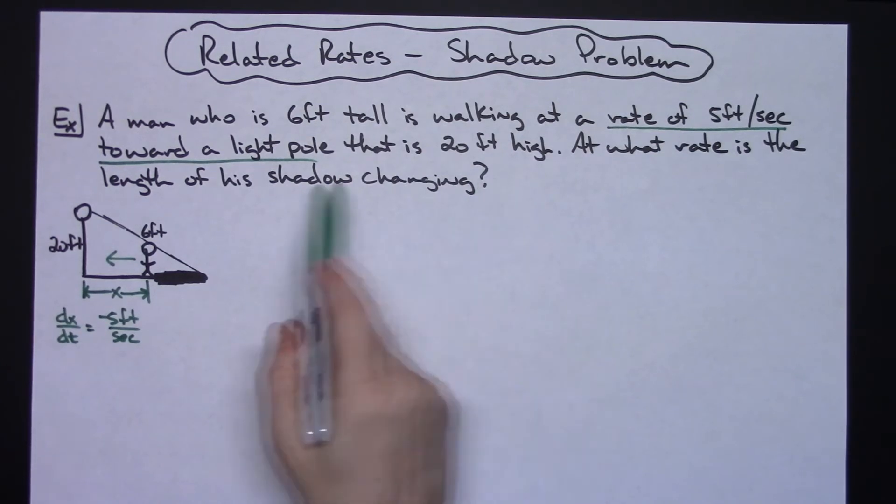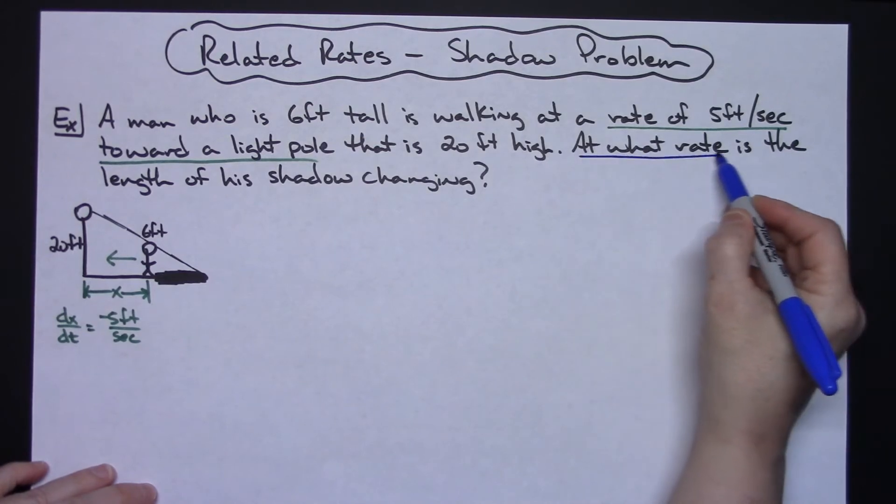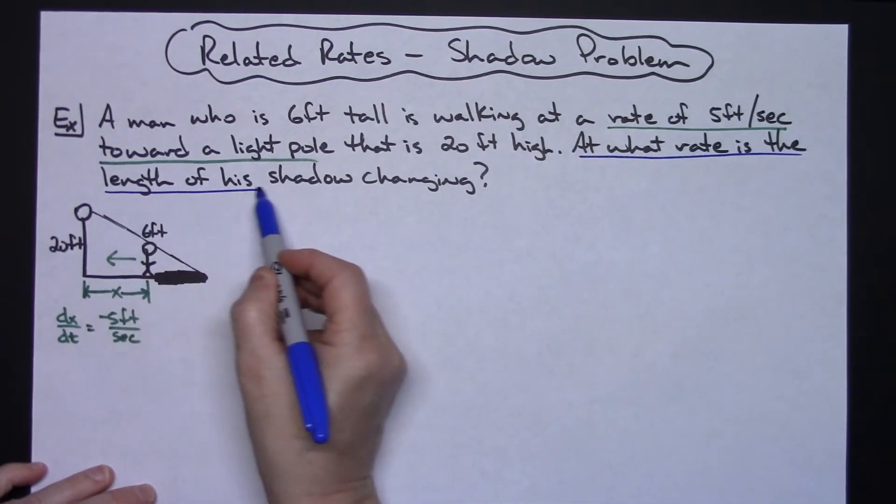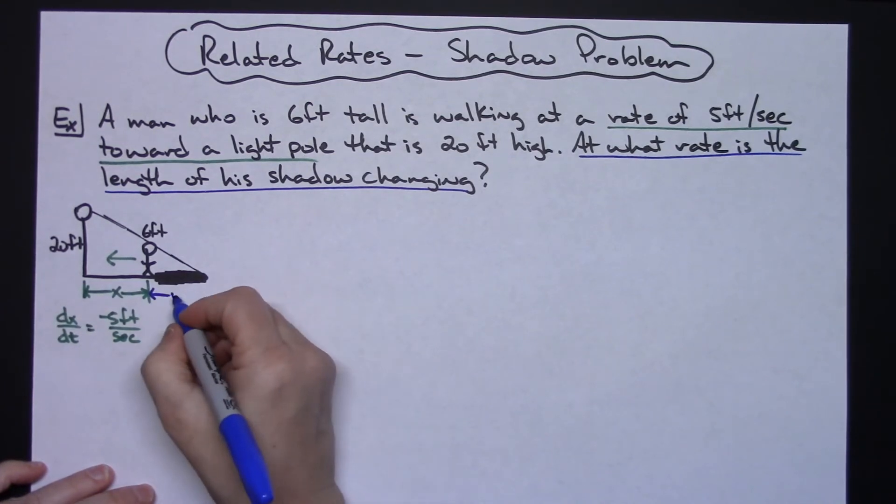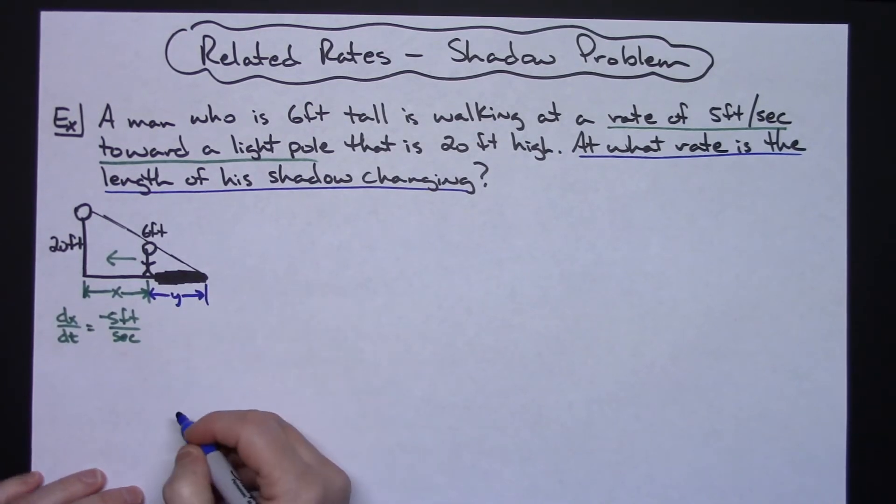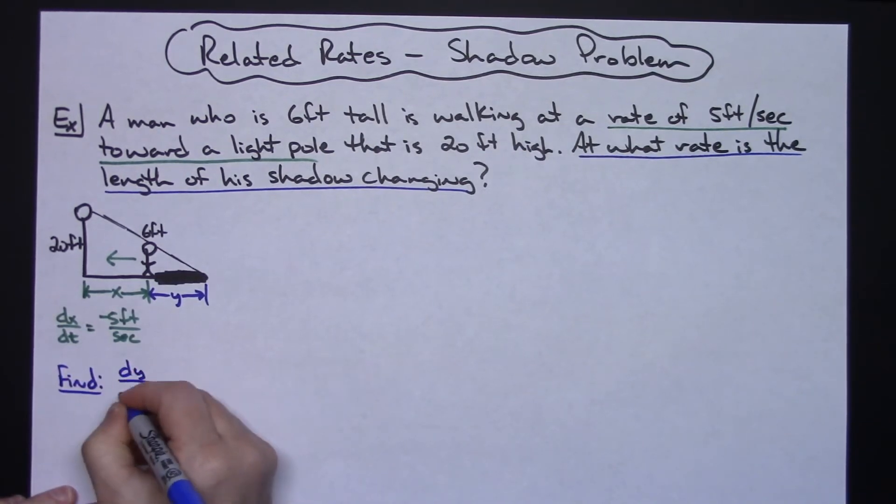What else does it give me? Twenty feet high for the pole—we've used that. At what rate is the length of his shadow changing? So let's do that in blue here. At what rate is the length of his shadow changing? Well, shadow's right here, so let's just denote that as y. So what I'm trying to find here is I am wanting to find dy/dt.